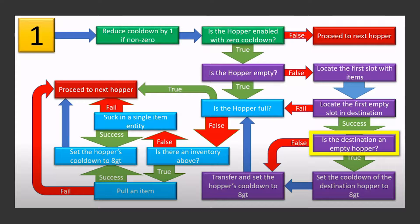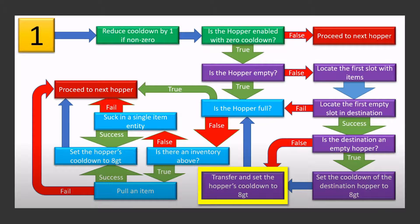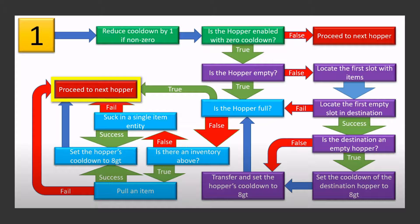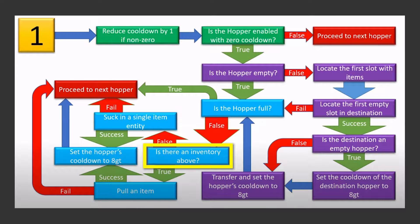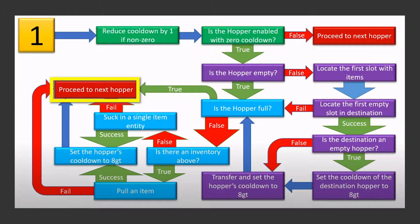If the destination is an empty hopper, it transfers the item and sets both the destination hopper and itself to a cooldown of 8 game ticks. If it's not a hopper or if it's a hopper with items, then it just transfers and sets its own cooldown. If either there is no destination inventory or the transfer was successful, then the hopper checks if it is full. If no, the hopper tries to pull an item either as an entity from the block above or an inventory above it. If either is successful, the hopper sets its cooldown to 8 game ticks and then proceeds to the next hopper.